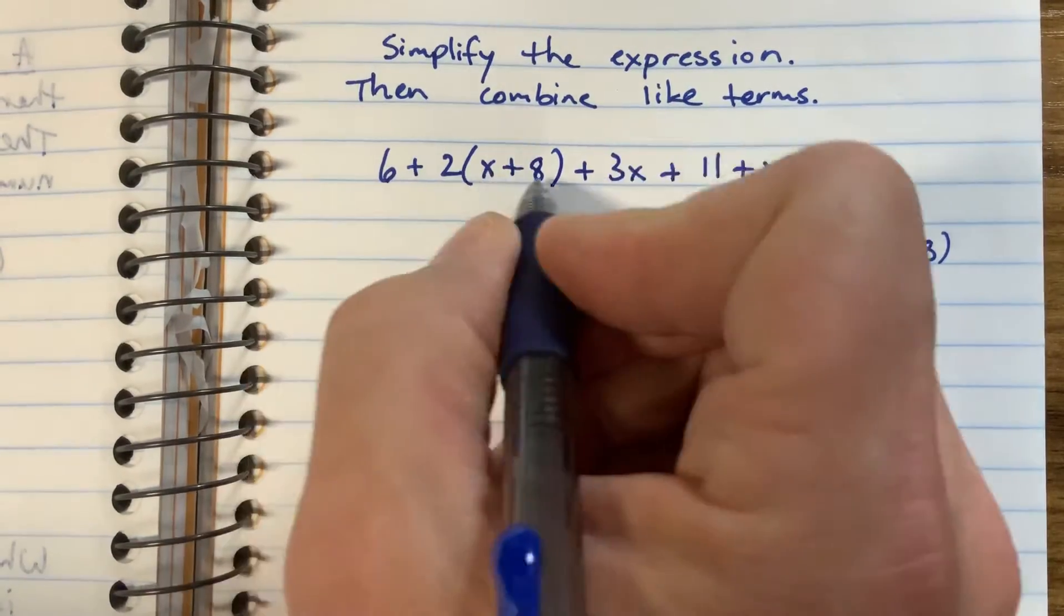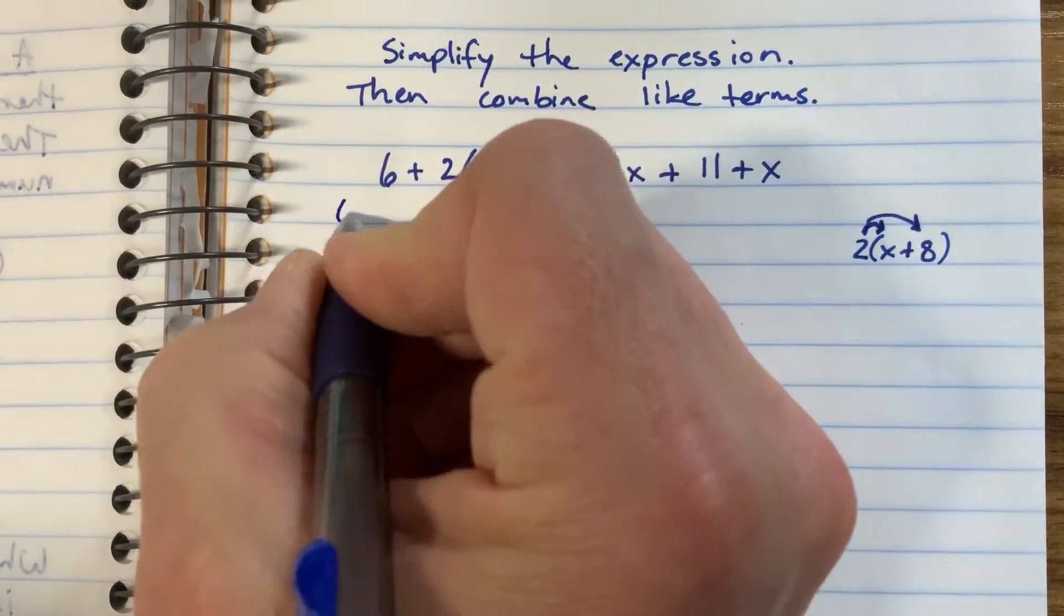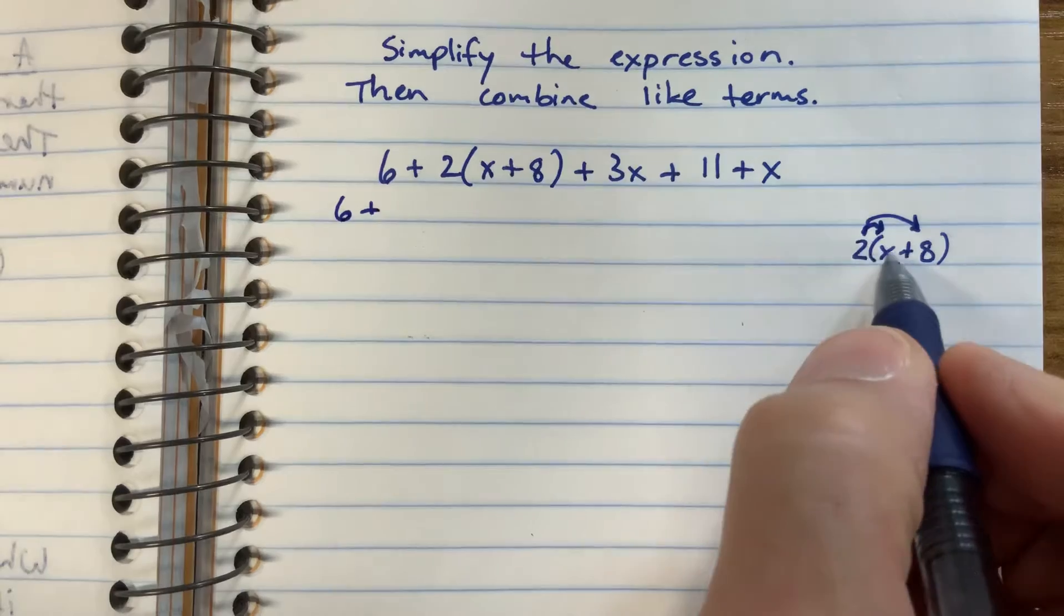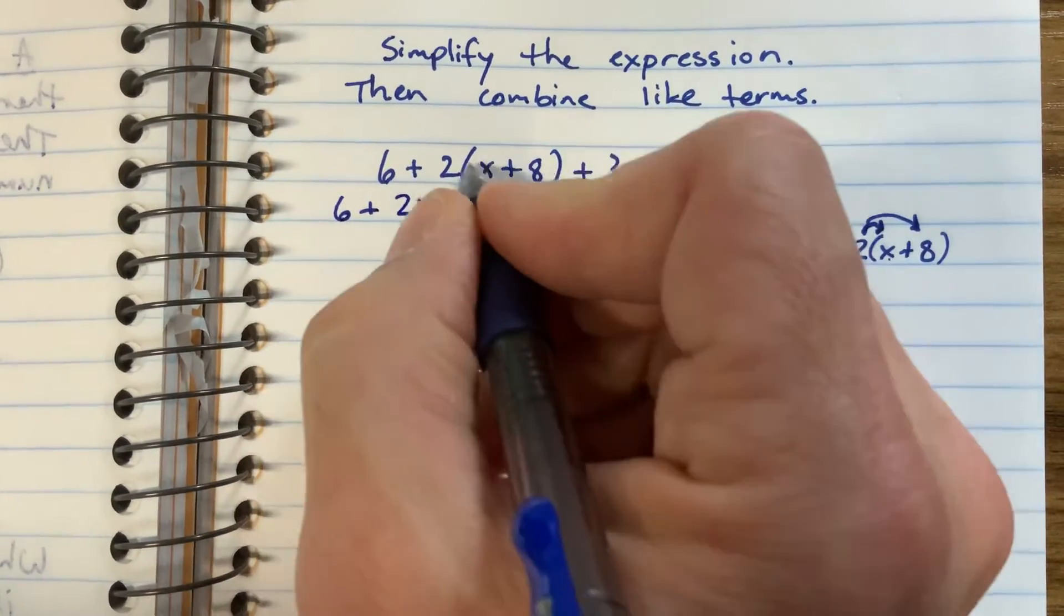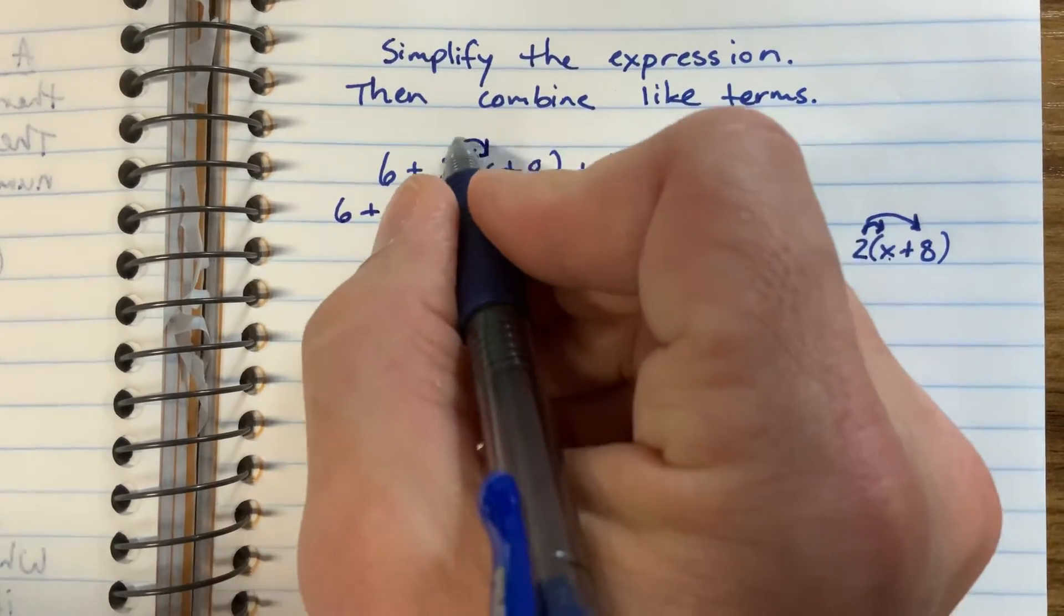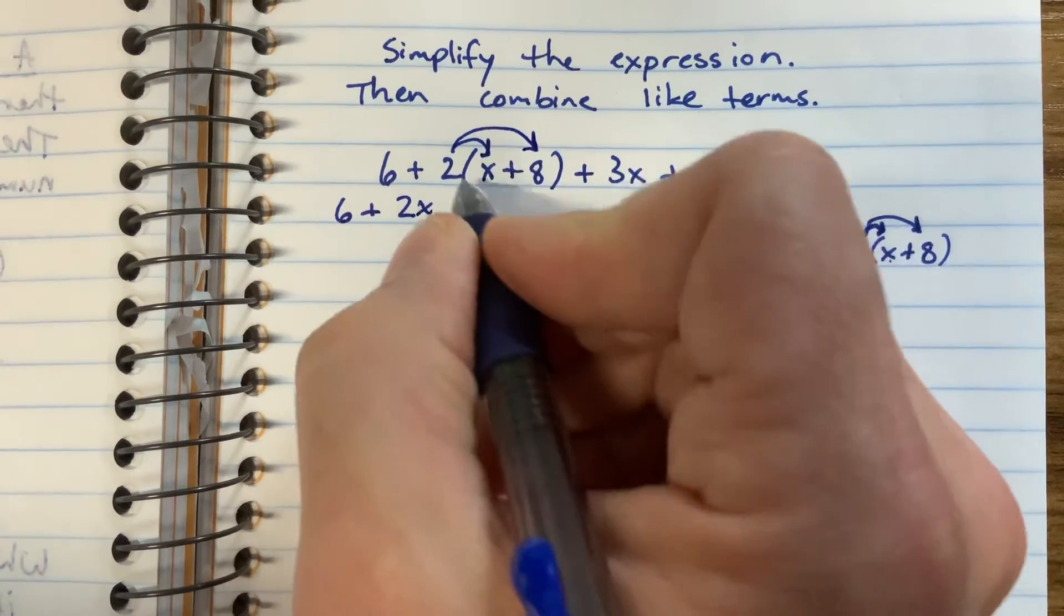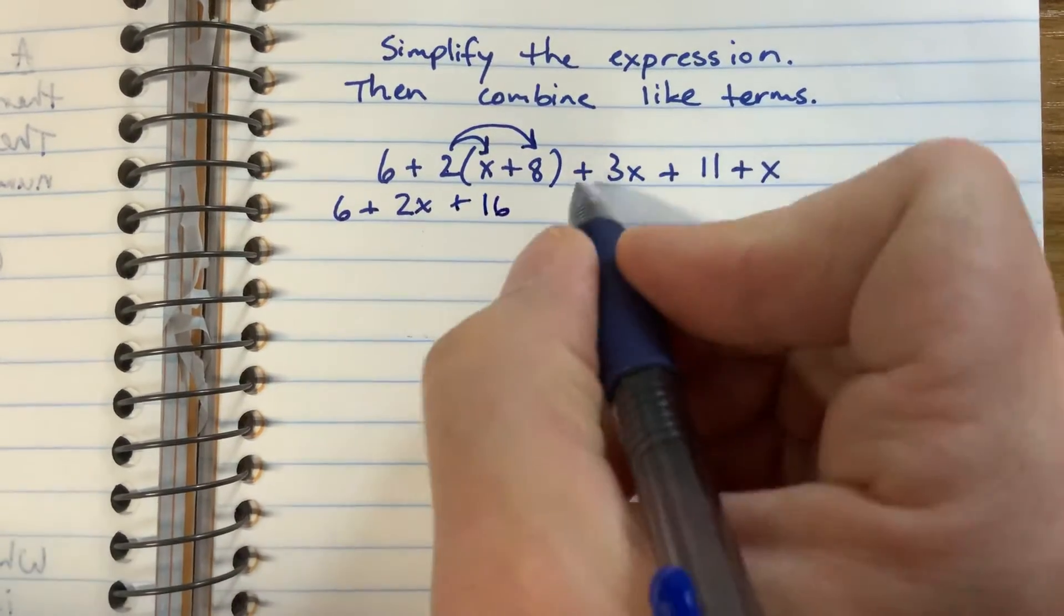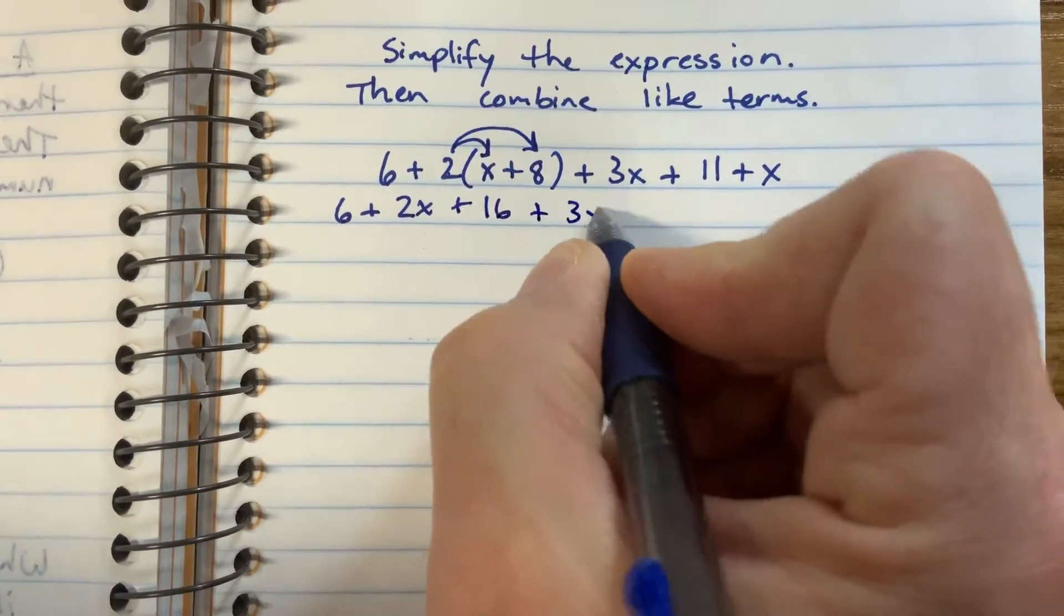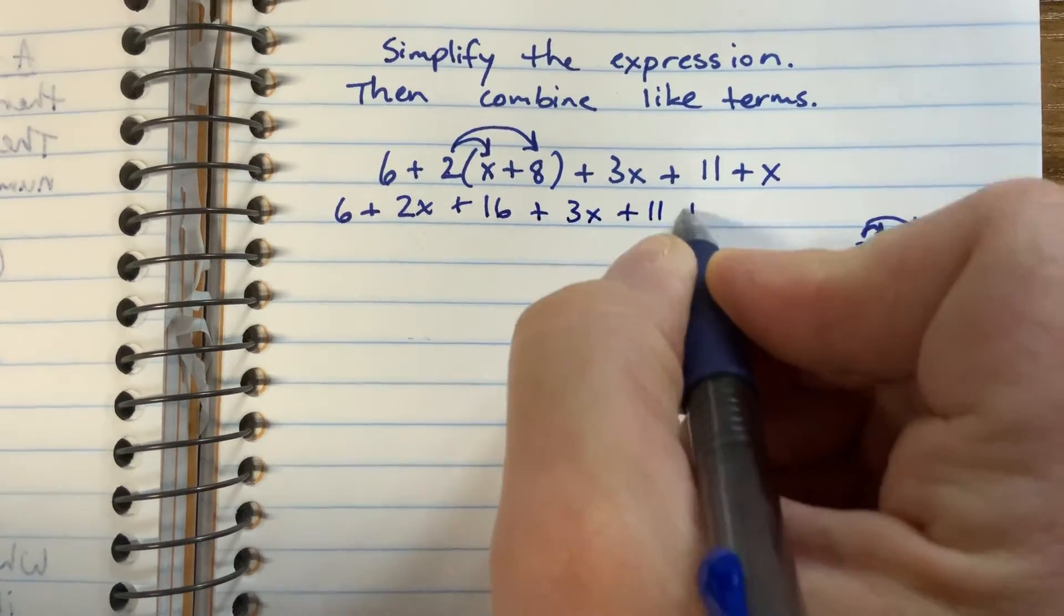I'm going to rewrite this with everything around it. So we have 6 plus, when we do 2 times x we get 2x, then we have a plus sign, 2 times 8 is 16, and then we have our plus 3x plus 11 and plus x.